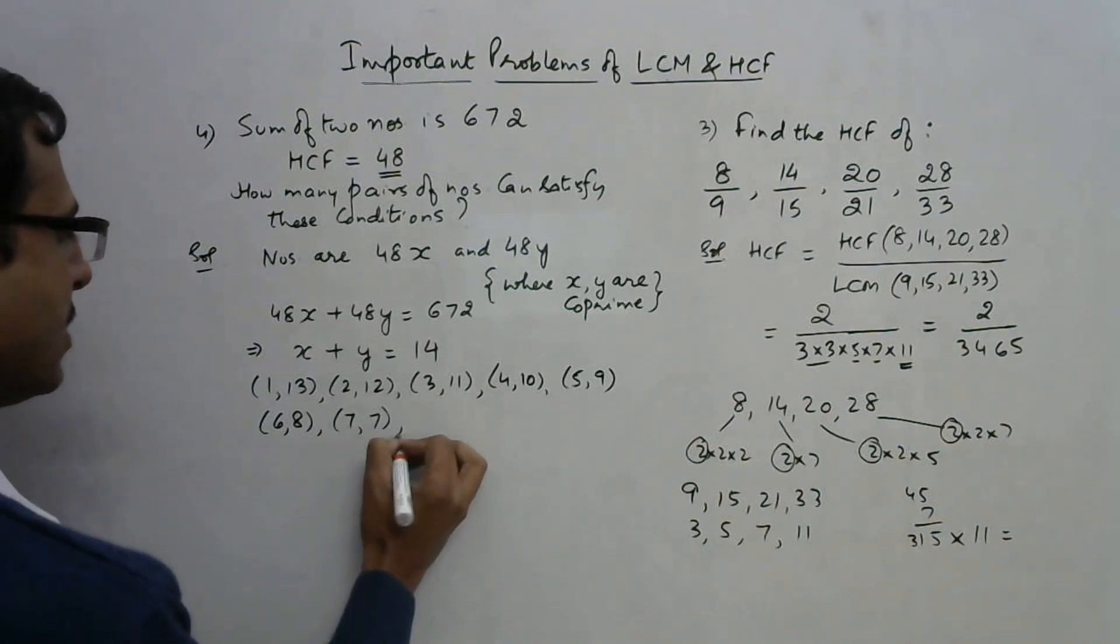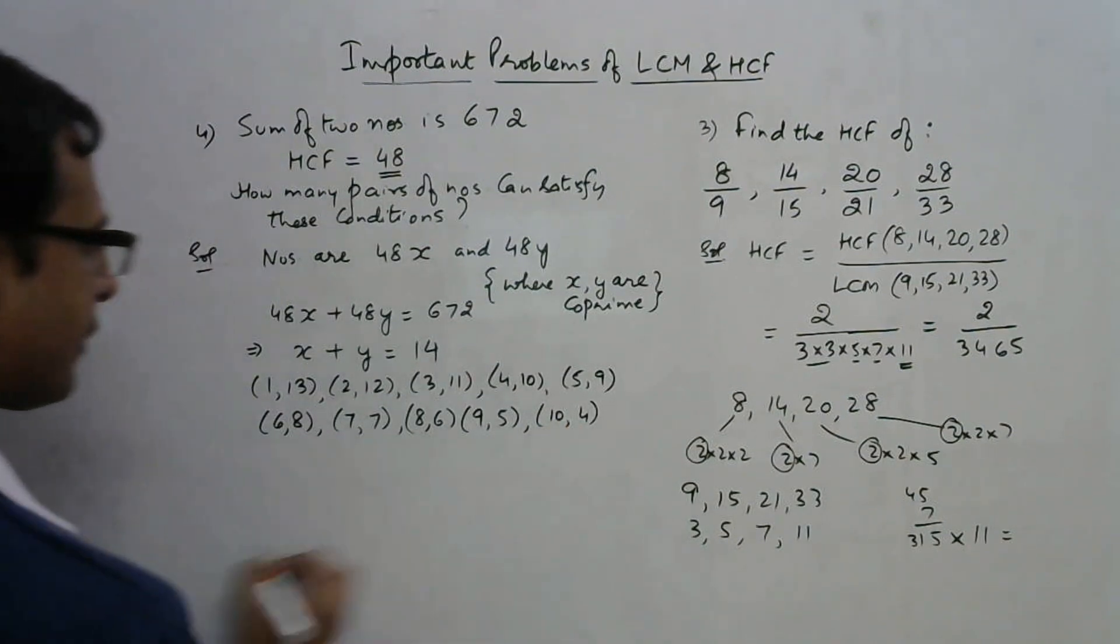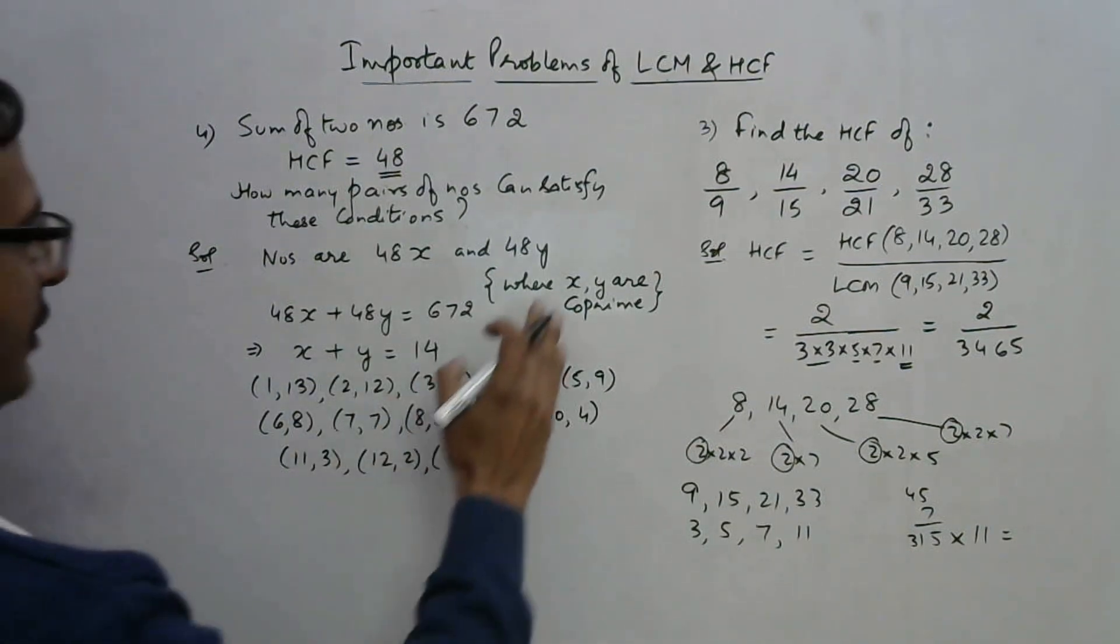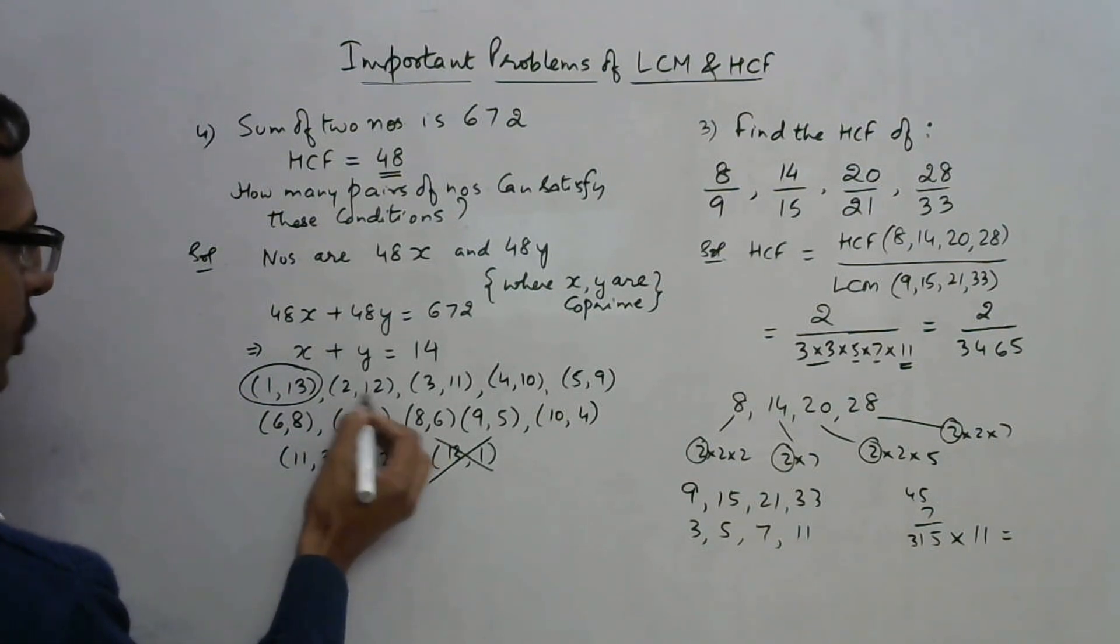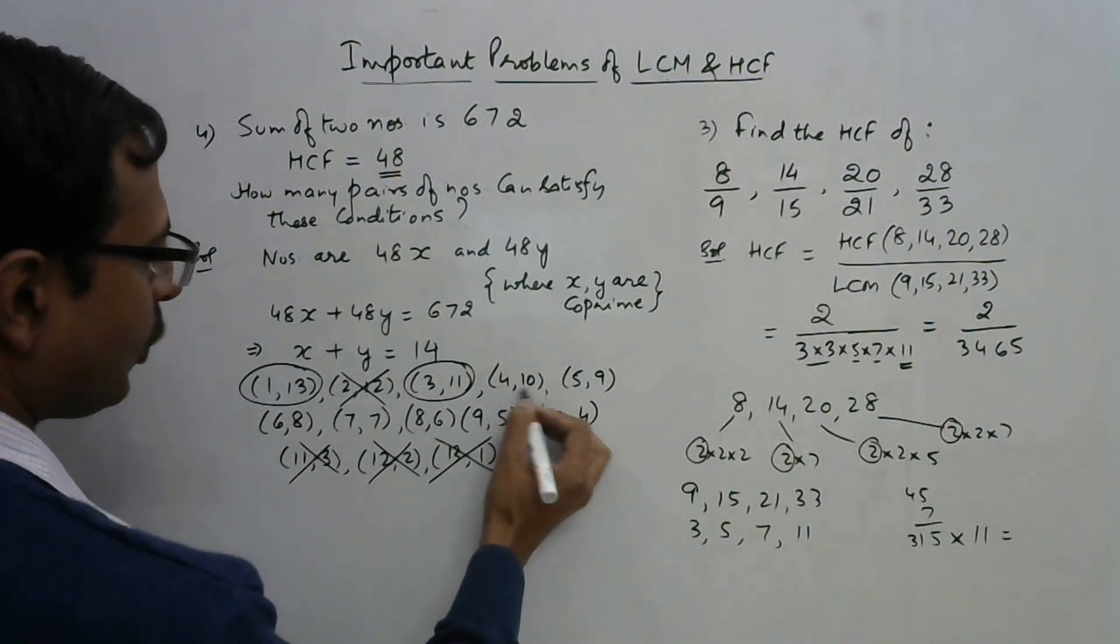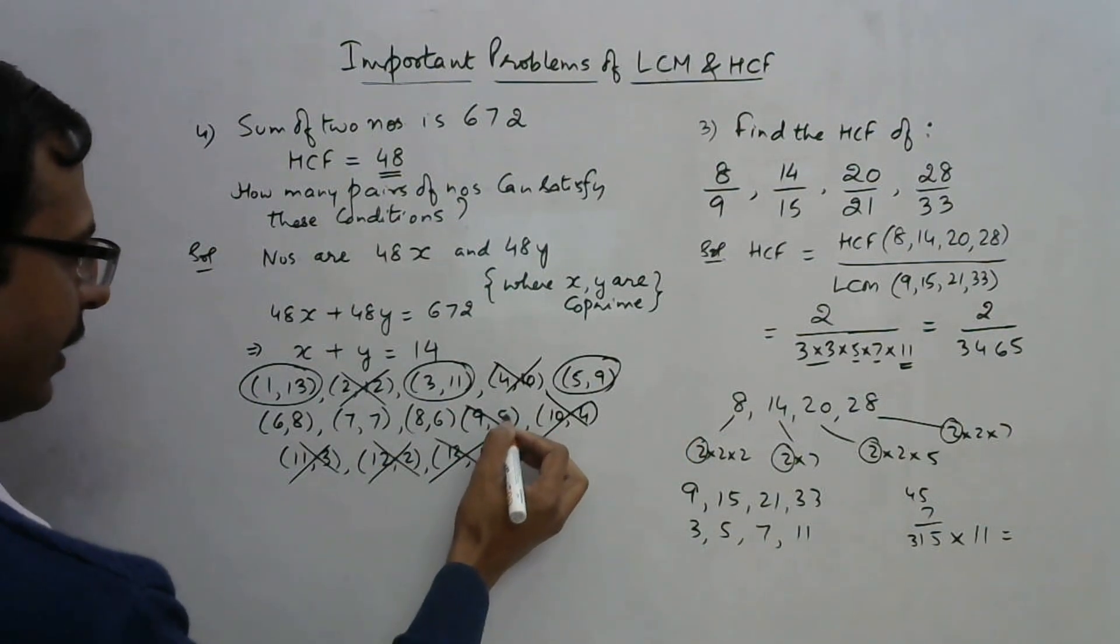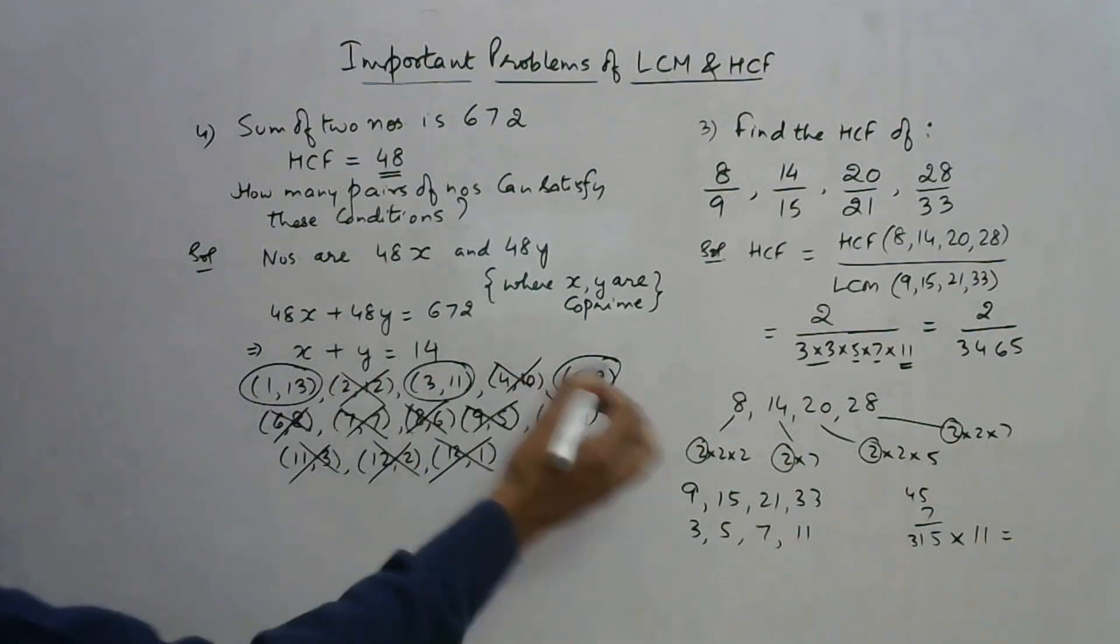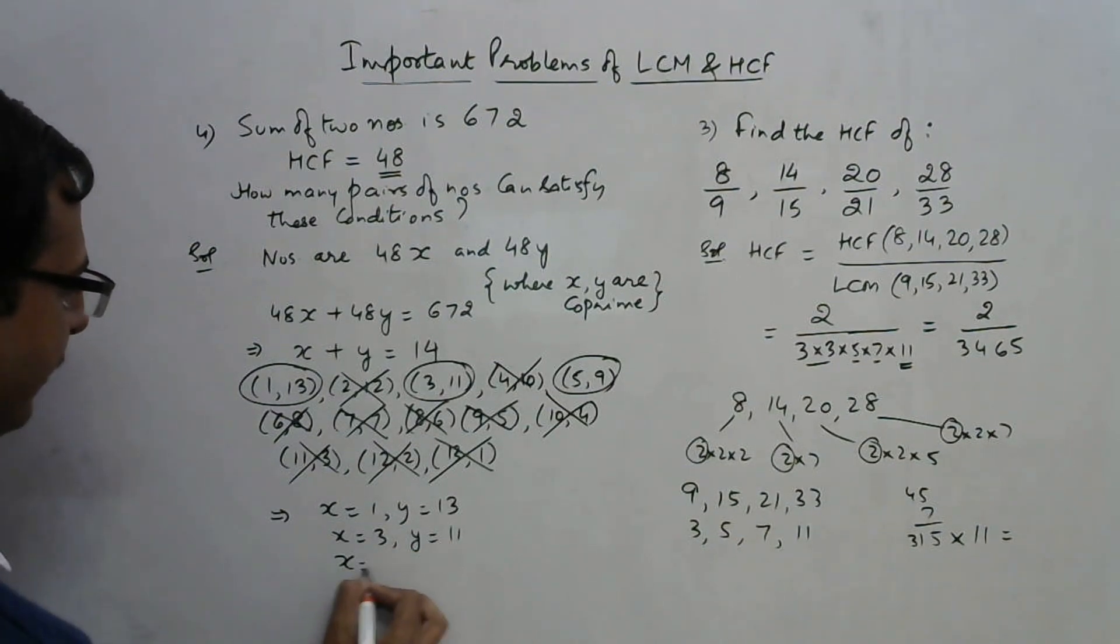Continuing: 8 and 6, 9 and 5, 10 and 4, 11 and 3, 12 and 2, 13 and 1. Out of these pairs, which two are coprime? 1 and 13 are coprime, so that's one pair (13 and 1 is the same). 2 and 12 are not coprime because they have a factor 2. 3 and 11 are coprime. 4 and 10 are not coprime. 5 and 9 are coprime. 6 and 8 have common factor 2. 7 and 7 have common factor 7. Only three pairs are possible: x is 1, y is 13; x is 3, y is 11; and x is 5, y is 9.